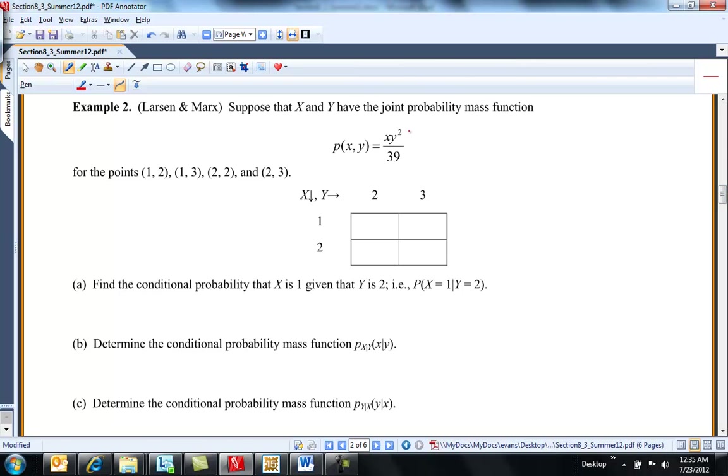Suppose X and Y have joint probability mass function. Here it is. Here's the points. So what's the probability 1, 2 would be 4/39. 1, 3 would be 9/39. 2, 2, 8/39. And this would be 2 times 9, right? 2 times 9 is 18/39. So this makes sense. This would be 13/39. This would be 36/39. This would be 12/39. And this would be 27/39.